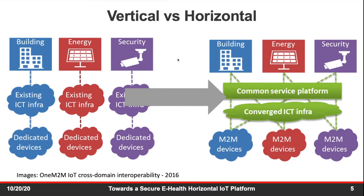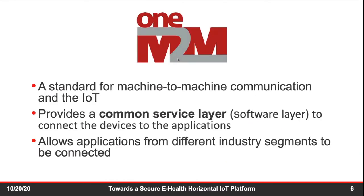Considering this horizontal platform perspective, recently there have been many standard horizontal IoT platforms. One of the most common is called the oneM2M standard. oneM2M is a standard for machine-to-machine communication and IoT. Its basic idea is to provide a common service layer — mainly a software layer — that connects devices to applications from different industries or domains, which is why we consider it horizontal.